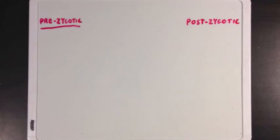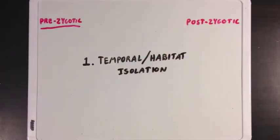The first type of prezygotic isolation is temporal slash habitat isolation. Temporal isolation refers to the fact that not all organisms mate at the same time. Some may mate at night, while others mate during the day. Some may mate in spring, while others mate in winter. If two organisms do not find mates at the same time, then they are temporally isolated.